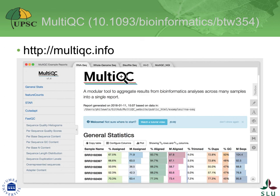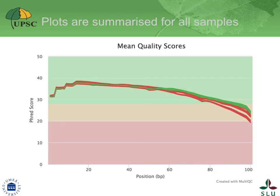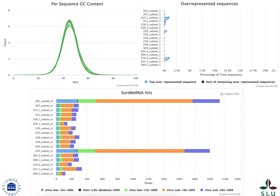Phil Ewels, who works at SciLife Lab in Stockholm, did not enjoy this and decided to create a tool called MultiQC that collates all the reports together. The tool gives an overview of the sequencing depth and average GC content. It summarizes all the average quality score plots in a single figure, giving an easy-to-interpret overview. It also summarizes information from over 40 different tools that can be used for data preprocessing. See for example the lower panel that shows the results from SortMeRNA.